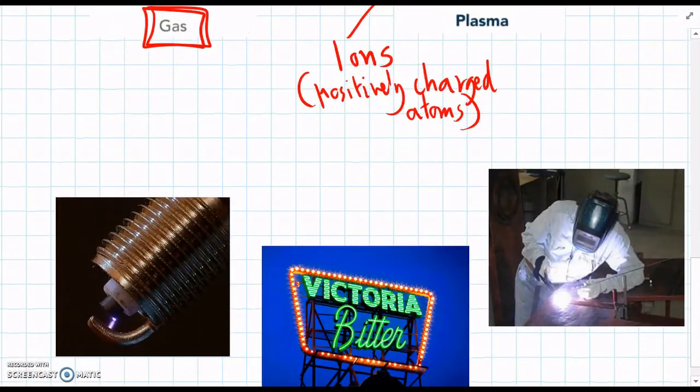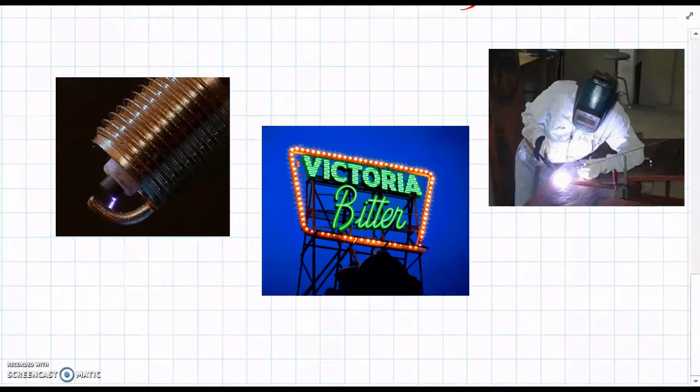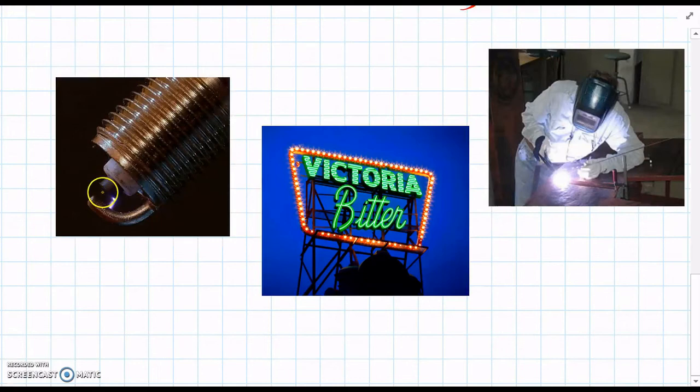And here are a few more useful ways that we use plasma in our society. The first one here is to make sparks, like in spark plugs in the car, which start the engine, or to light the stove, or light the barbecue. We can see there's a tiny bit of plasma down here in the spark. So when we see sparks, they're really just plasma.